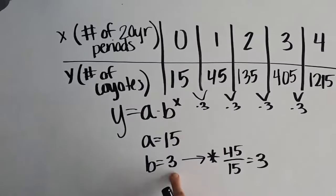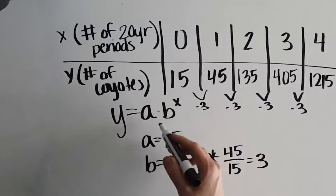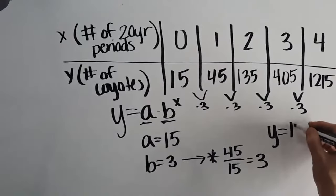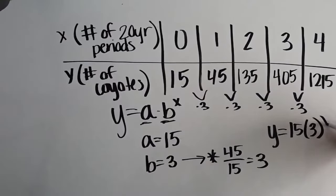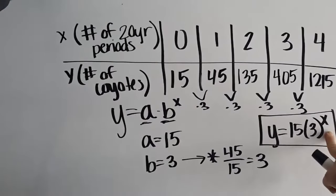So now that we have our initial value and our common multiplier, we can write our final equation by substituting these values in for a and b. So we end up with y equals 15 times 3 to the power of x.